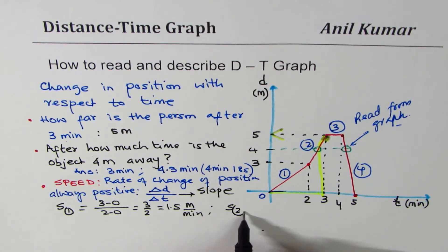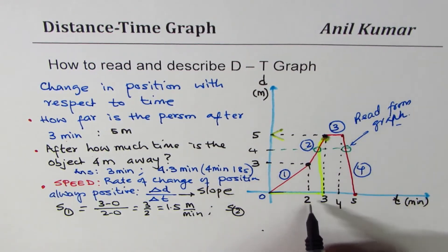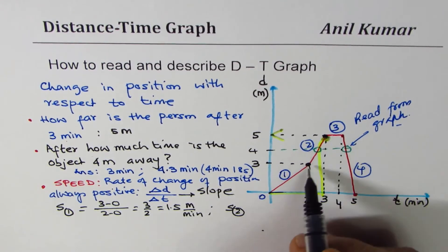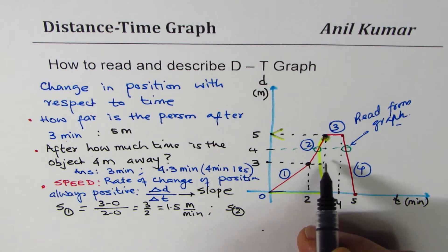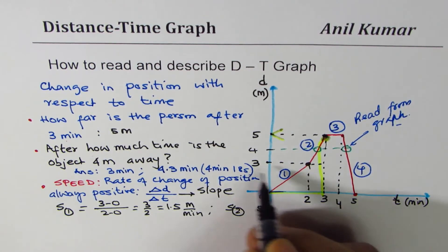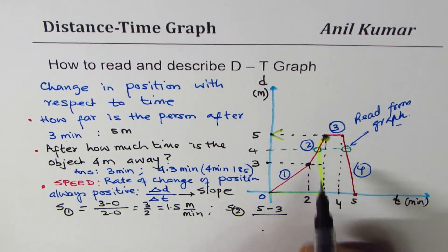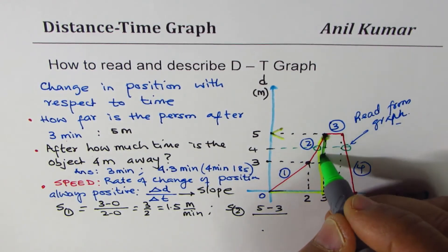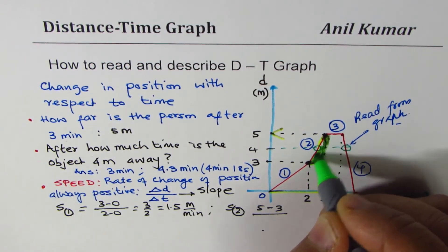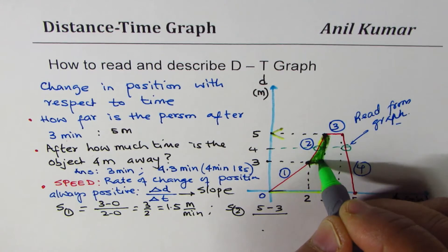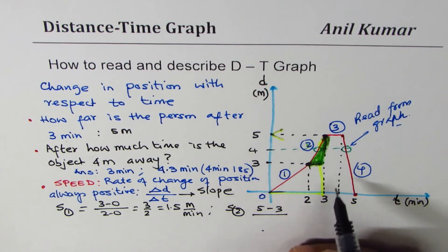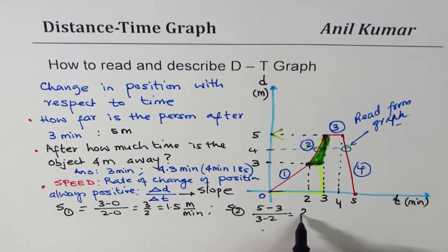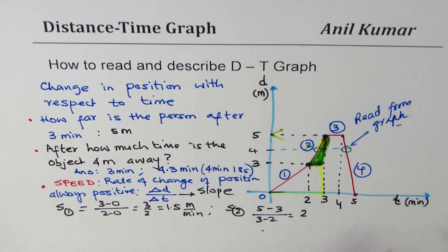Now let's find speed in the second interval, from time 2 to time 3. Change in distance is 5 − 3 = 2, and change in time is 3 − 2 = 1. So speed = 2/1 = 2 meters per minute. Units are meters per minute — always mention the units.